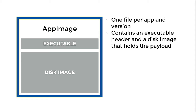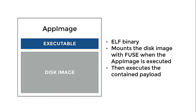So, what is an AppImage? The AppImage is the one file that I talked about — really one file per application. You can have such a file for every version of an application and they can also co-exist. The AppImage contains two parts: the first part is a little executable header, and the second part is a disk image that holds the application payload. The executable is a regular ELF binary, a Linux executable binary, which mounts the disk image and then executes the content of the disk image.